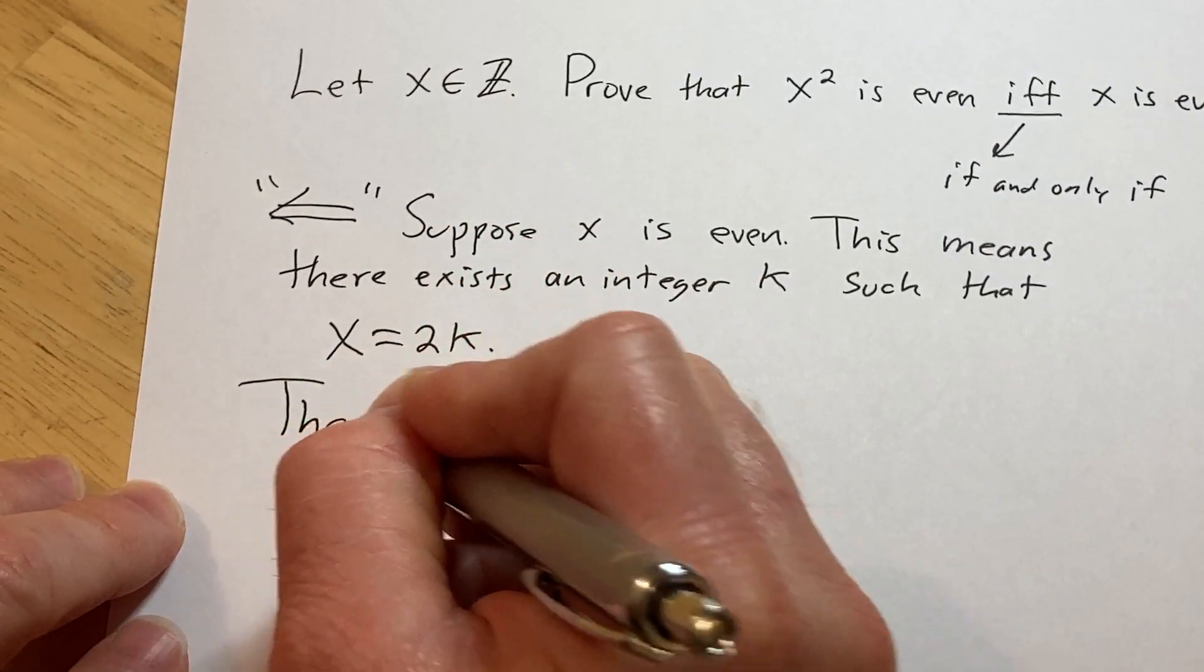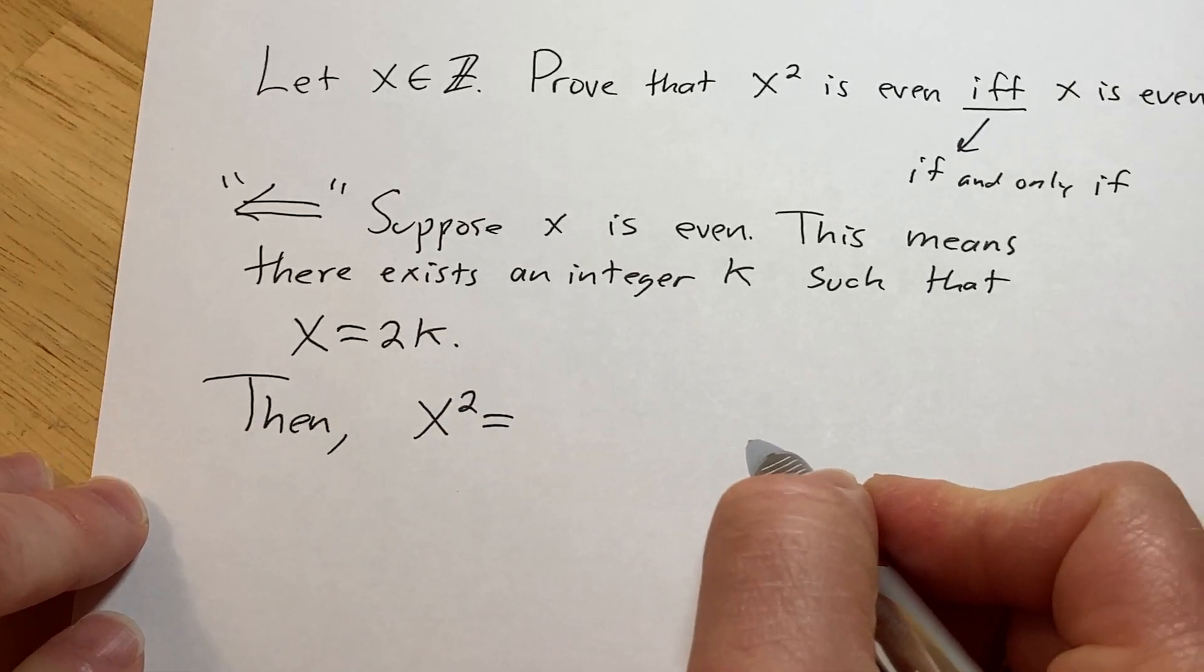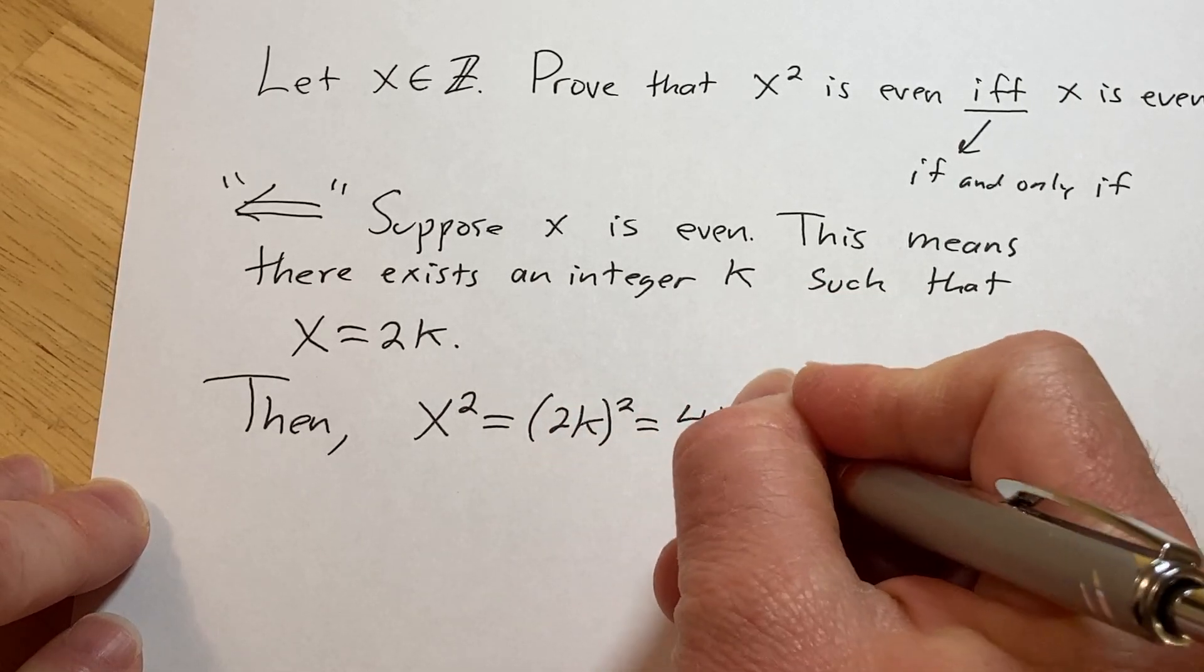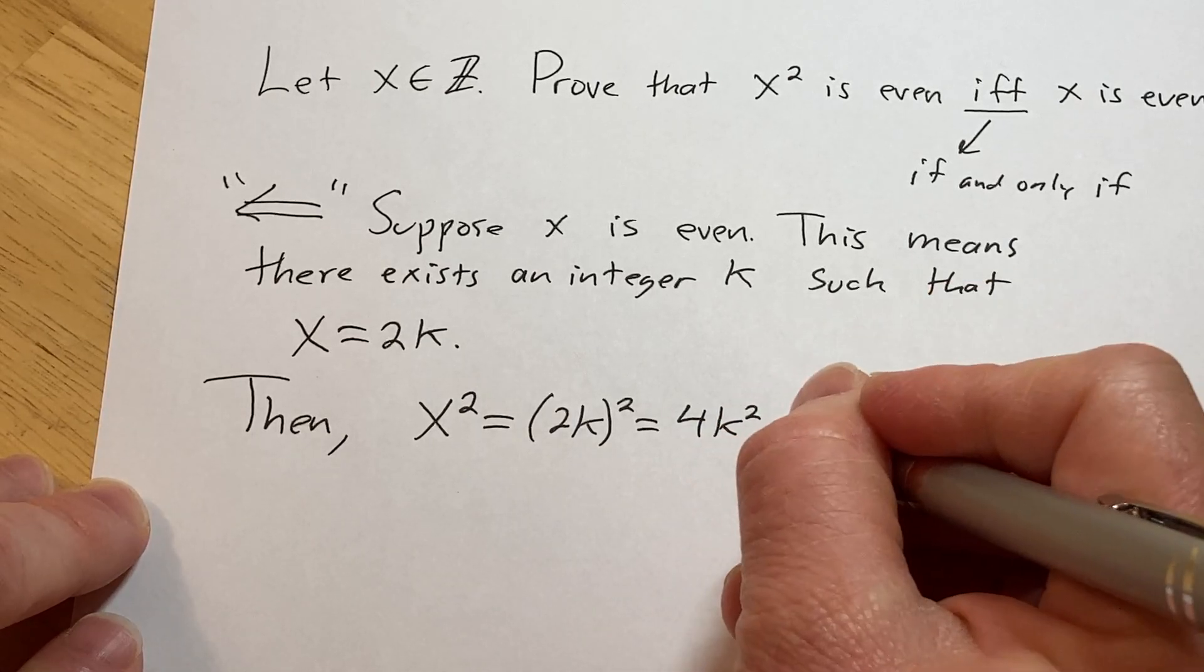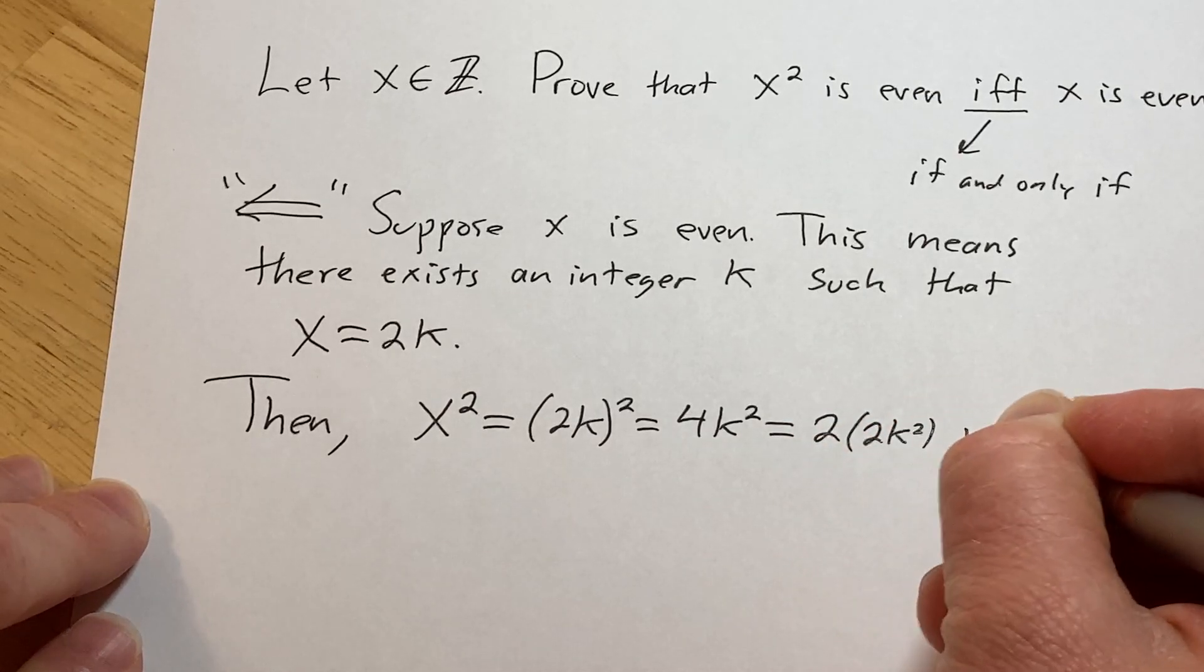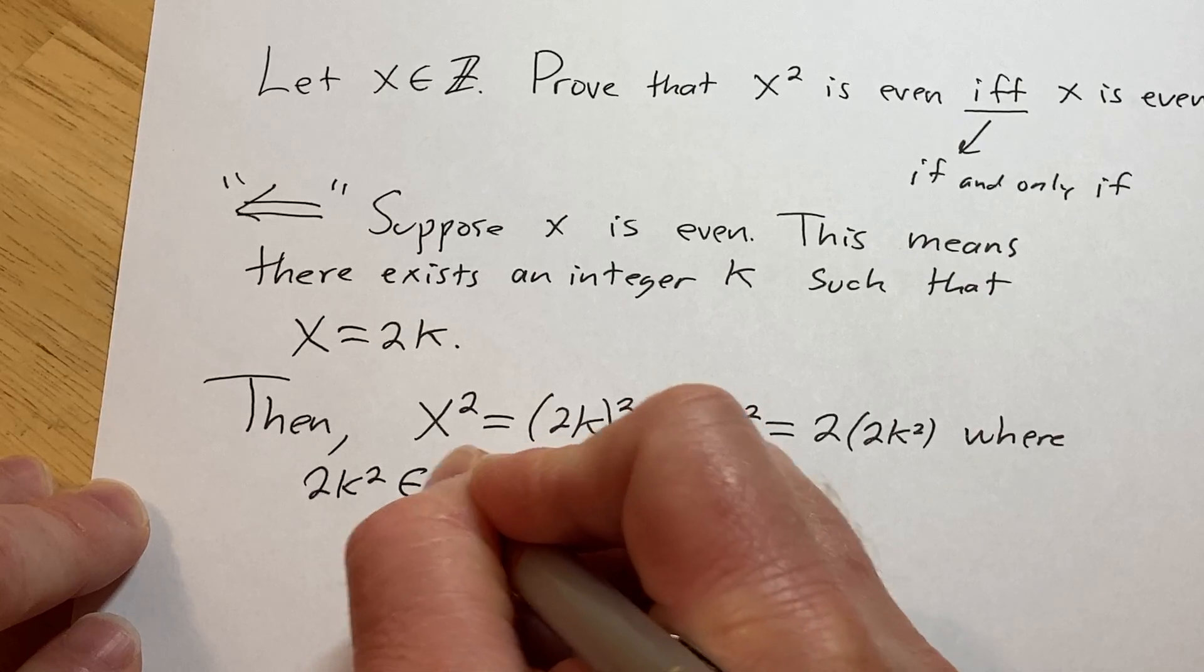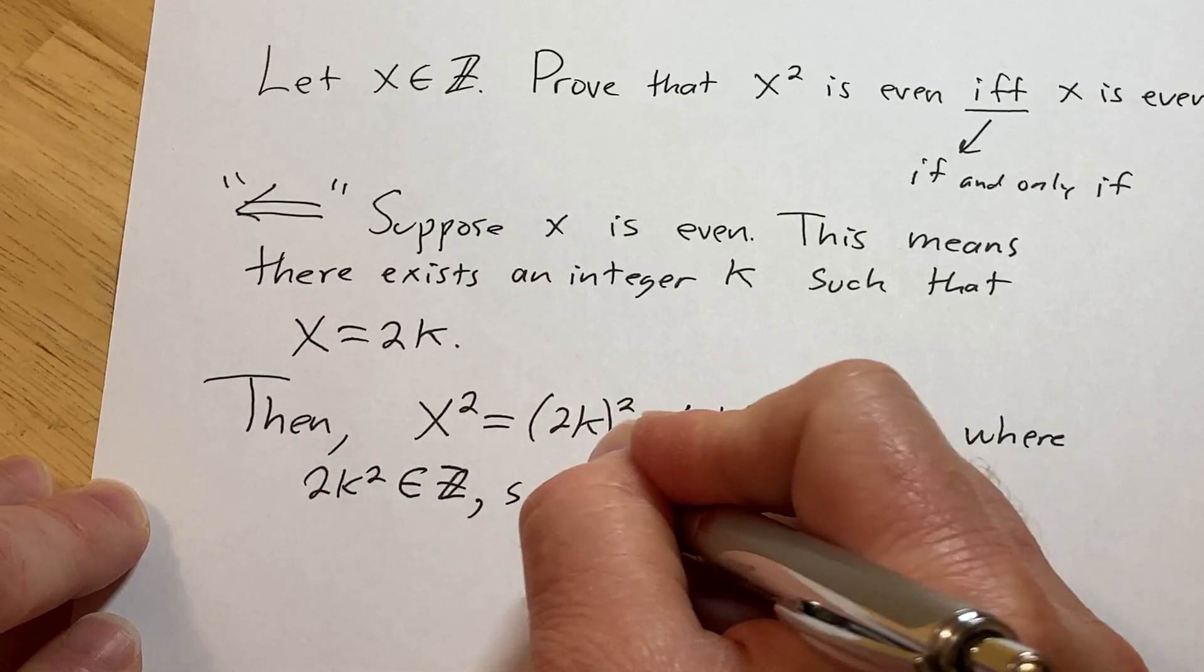So then, x squared, well x is equal to 2k, so you can just simply square the 2k, and then you square the 2, so you get 4k squared. And so now you have to show that this is a multiple of 2, so what you can do is you can write it like this, this is 2 times 2k squared, where 2k squared is an element in the set of integers. So that's precisely what it means for x squared to be even, so x squared is even.